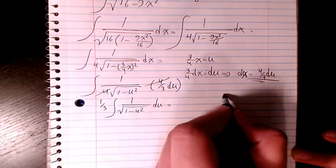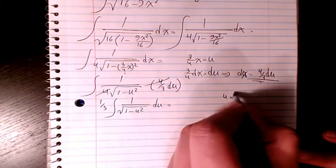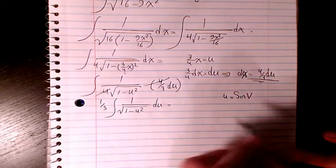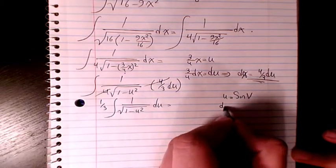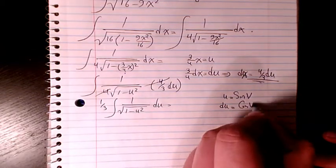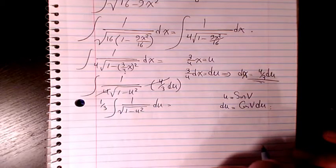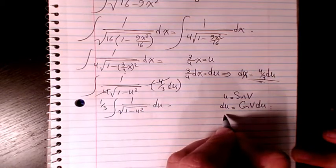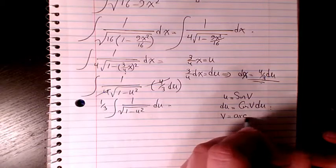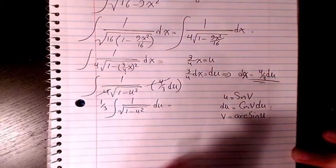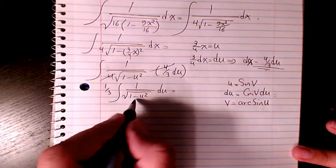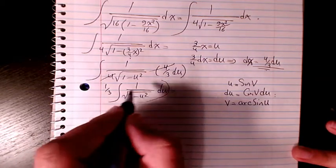Then instead of u you can write sine v, and then du will be cosine v dv. And you can say v will be arc sine u. So then you can say the integration of